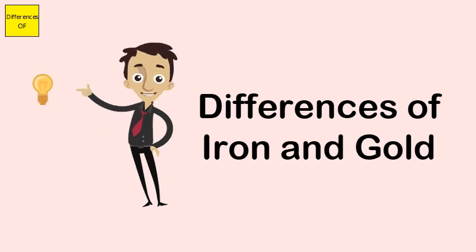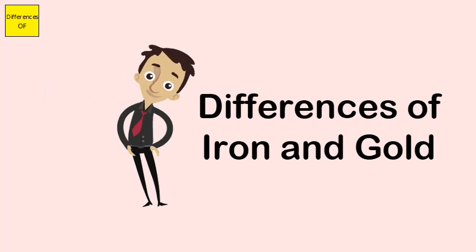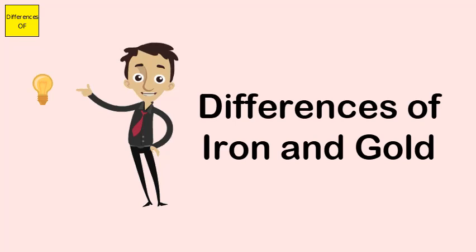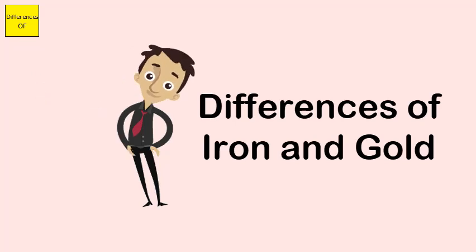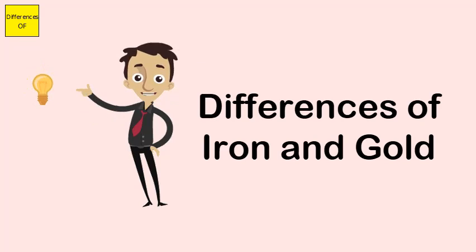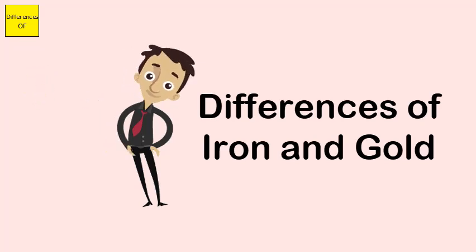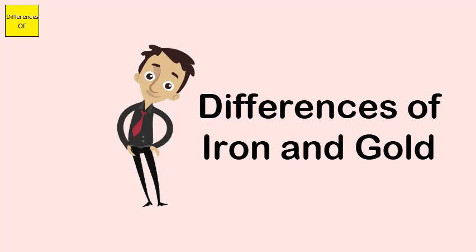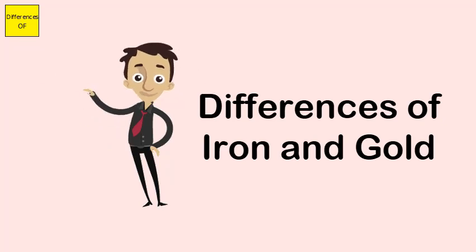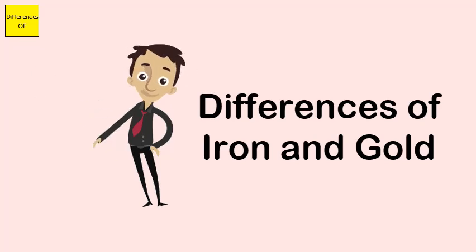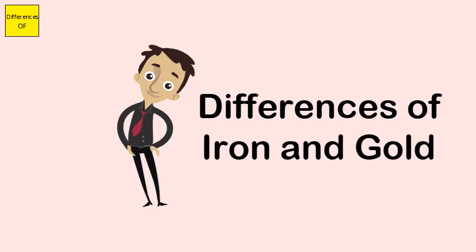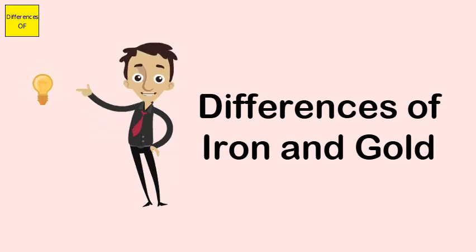Iron is pale yellow in color, while gold is yellow in color. Iron is cheap, gold is costly. Iron can't be considered as an investment option, gold is an investment option. Iron needs a lot more space for safekeeping, gold needs lesser space. Iron has atomic number 26, gold's atomic number is 79. Iron is not shiny, gold shines and glitters. Iron has a boiling point of 2862 degrees Celsius, gold's boiling point is 2856 degrees Celsius. Iron is magnetic, gold is non-magnetic.